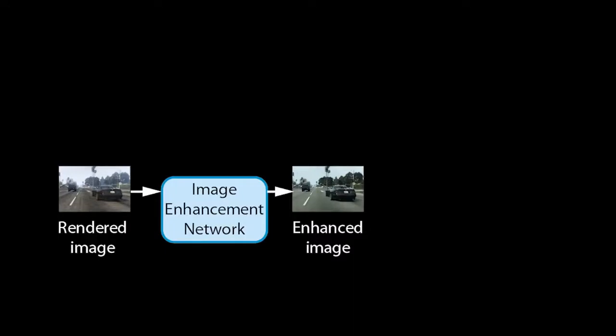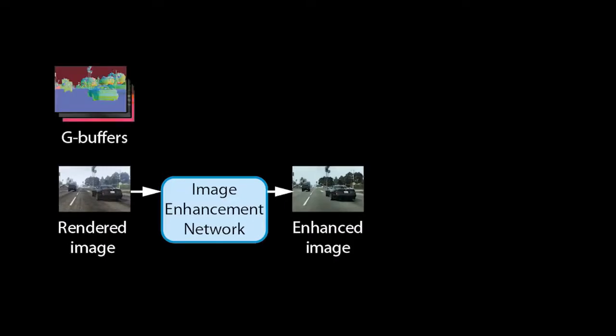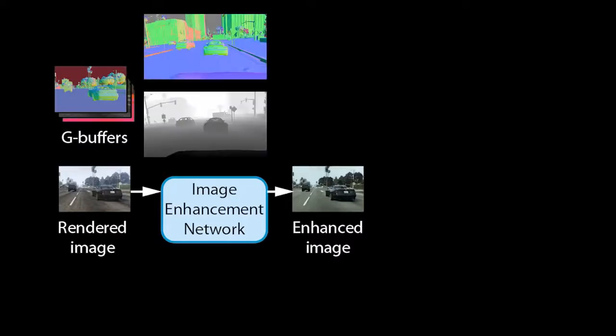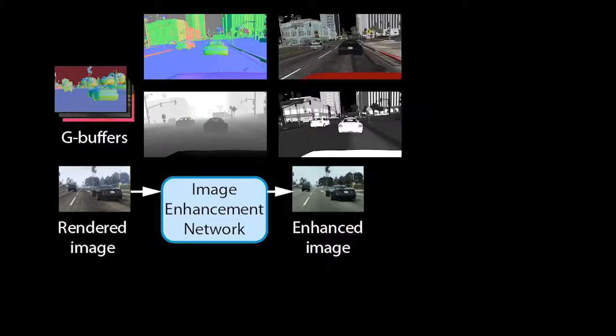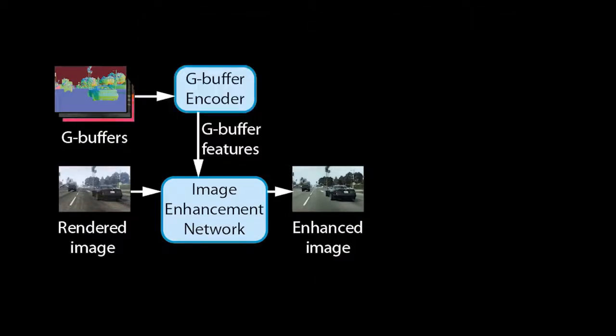Let us now look at our method in detail to understand why it is more stable and produces less artifacts. Our method takes a rendered image from the game and passes it through an image enhancement network to produce an enhanced image. We further extract a set of rendering buffers, called G-buffers, produced by the game engine. G-buffers contain geometric information, such as surface normals or distance to the camera, material information such as albedo or glossiness, and may also contain information about the lighting in a scene. We pass the buffers through a G-buffer encoder network to produce feature tensors at multiple scales. The tensors encode the information about the rendered scene.